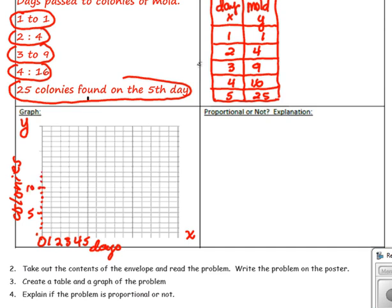Eleven, twelve, thirteen, fourteen, fifteen, sixteen, seventeen, eighteen, nineteen, twenty, twenty-one, twenty-two, twenty-three, twenty-four, twenty-five.